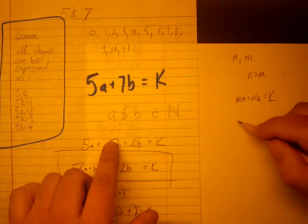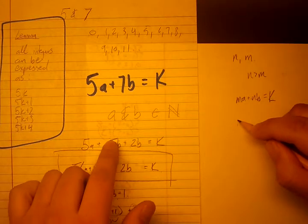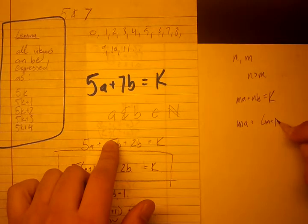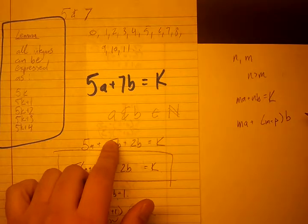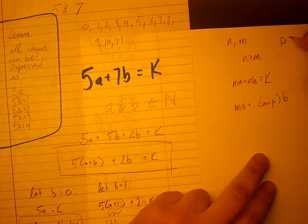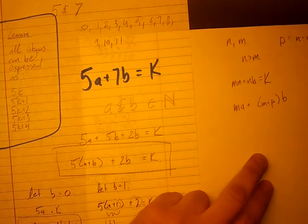So the same thing we'll do here. We'll say m·a plus (m + p)·b. I'll define p. That's now the problem that we're going to deal with. And p is equal to n minus m.